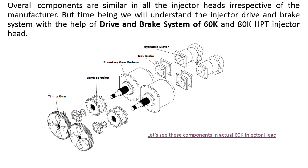The final component of the drive and brake system is the timing gear installed in the 60K injector head. The timing gear is used to synchronize the motion of the two chains so that their speed remains the same. These gears are interlinked — if one stops, the other will keep the chain moving. So if one hydraulic motor fails, the timing gear will keep the other chain in movement as well. The timing gear can therefore also serve as a backup in case one hydraulic motor fails.